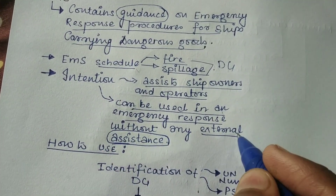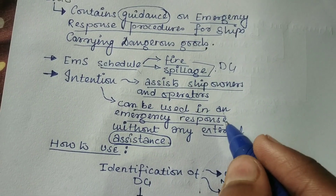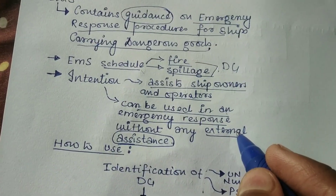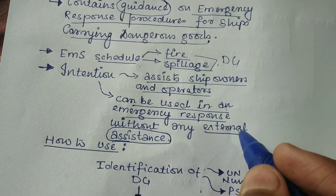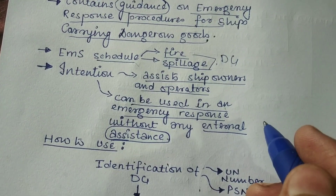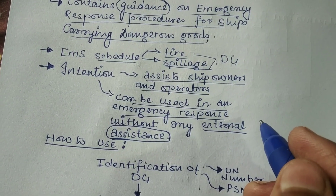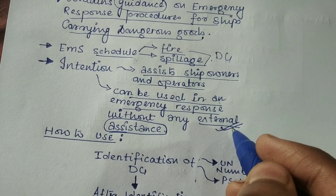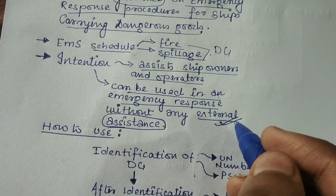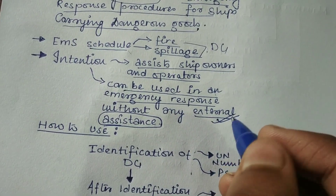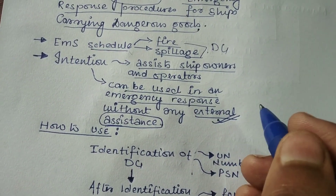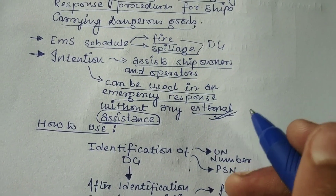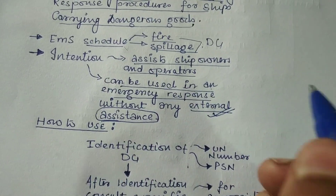This EMS contains all the procedures on what to do in case of a spillage or fire involving dangerous goods without any external assistance. The ship's crew can take actions according to the given procedures.